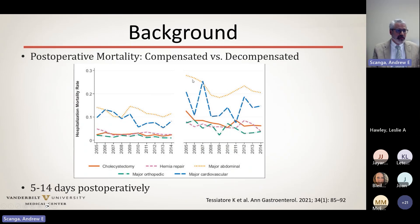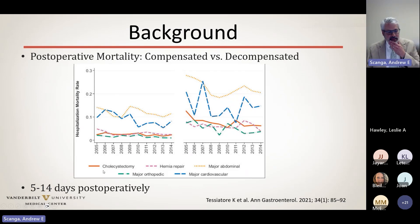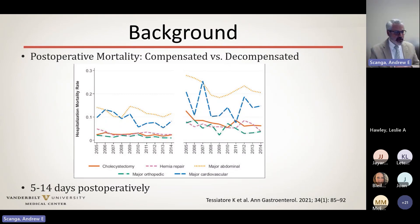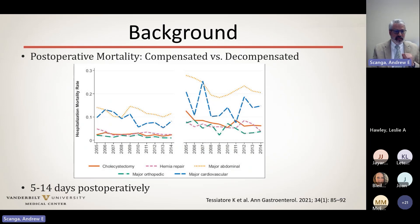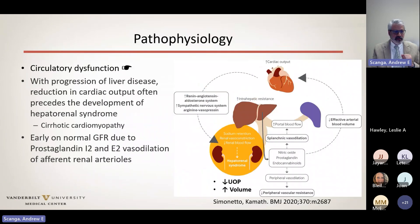Compensated disease carries much lower perioperative and postoperative mortality risk compared to decompensated disease. Those undergoing major abdominal surgery have a 20 to 25% risk of mortality. When you see decompensation postoperatively, it generally does not occur immediately — it starts to manifest clinically five to 14 days after the procedure. We frequently see this in patients with compensated disease who underwent cholecystectomy: they get discharged, then about a week later they show up with ascites and doing poorly.